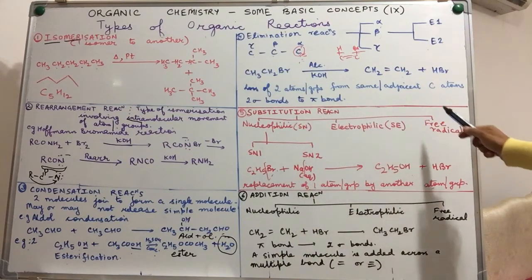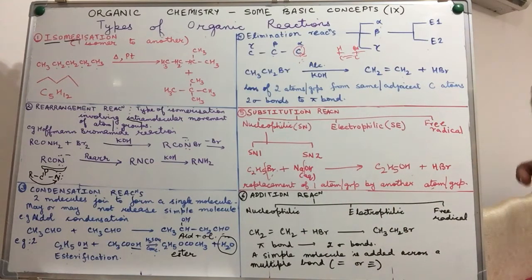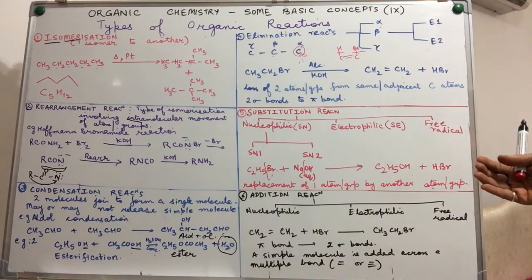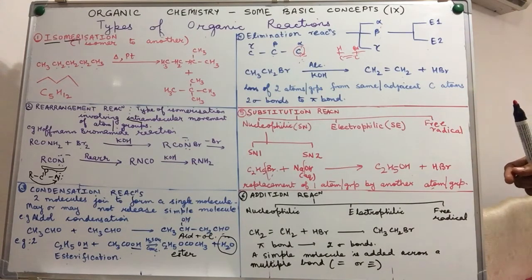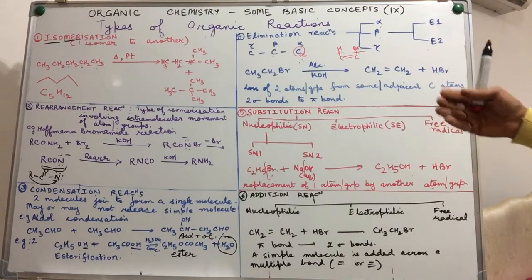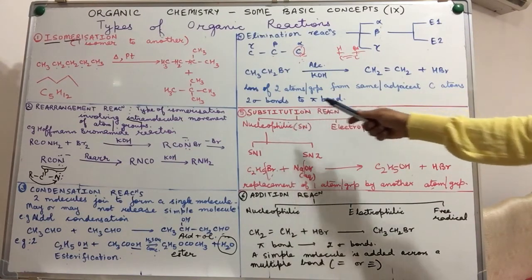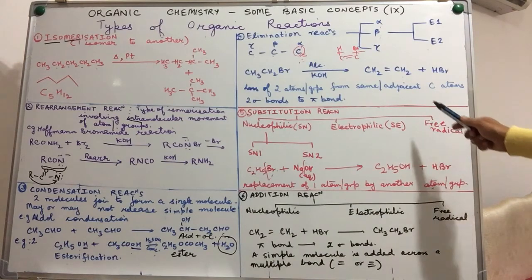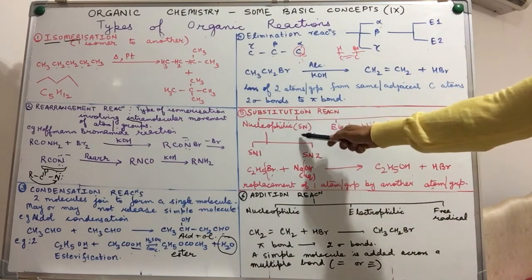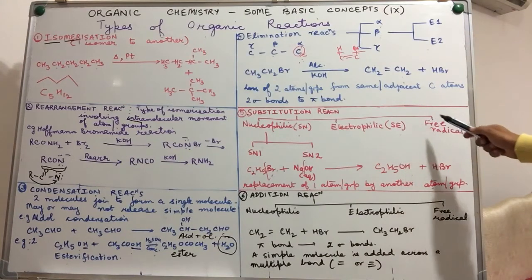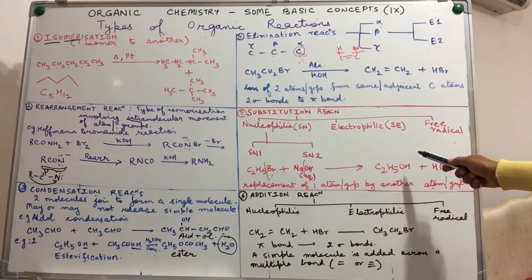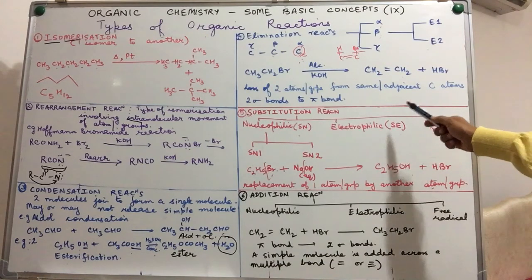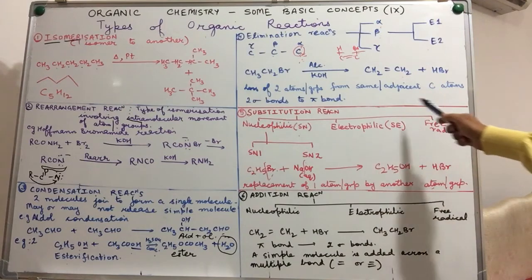Nucleophilic, electrophilic, free radical. These terms are used depending upon whatever is the attacking reagent. If you have seen the previous video, we've talked about reagents involved. So depending upon whether the initial attack takes place by a nucleophile, by an electrophile or a free radical, we will call it as a nucleophilic substitution or an electrophilic substitution or a free radical substitution. During your course of study, you will be dealing with mechanisms of all of these.